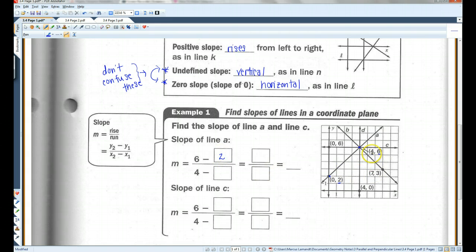And the run would be the X value. So I've got four and zero. Four minus zero. Six minus two is four. Four minus zero is four. Four divided by four is one. So the slope is one.